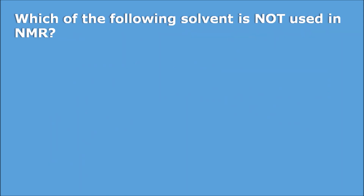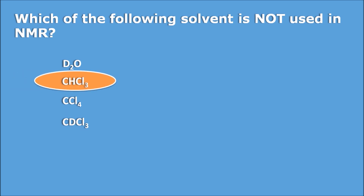Now a question from pharmaceutical analysis: which of the following solvents is not used in NMR? Options are D₂O, CHCl₃, CCl₄, and CDCl₃. The solvent in NMR should be devoid of protons, particularly for proton NMR, as protons may interfere with the study. Among the options, CHCl₃ contains a proton while the remaining have either deuterium or no protons. So CHCl₃ is not selected as a solvent in NMR. This is a direct question and everyone can equally answer it.